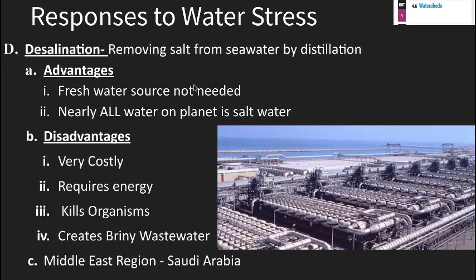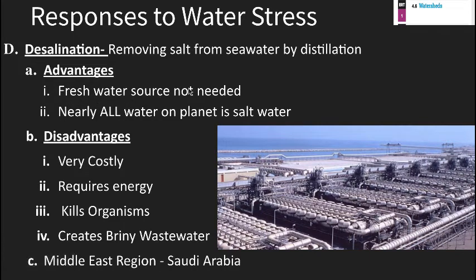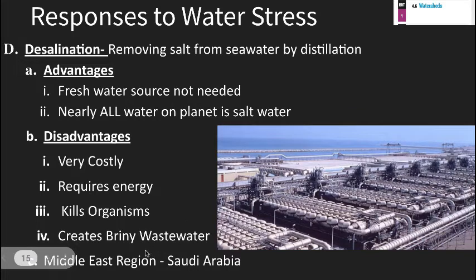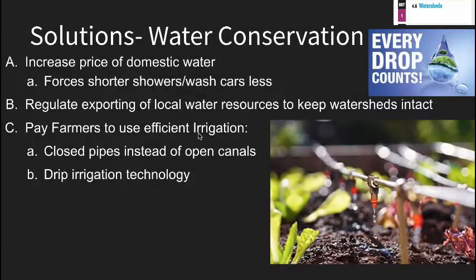Another way to get more fresh water is desalination — removing salt from seawater, primarily by distillation. A key advantage is that a nearby fresh water source is not needed, and nearly all the water on the planet is salt water. However, it isn't widely done worldwide because it's very costly, requires significant energy, can kill organisms in the water, and creates briny wastewater — a very salty byproduct that has to be disposed of. It is more common in places like Saudi Arabia, where their primary water access is salt water.